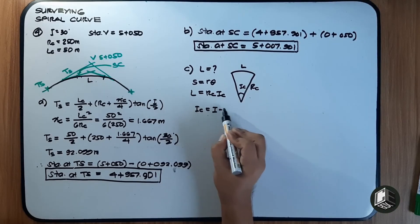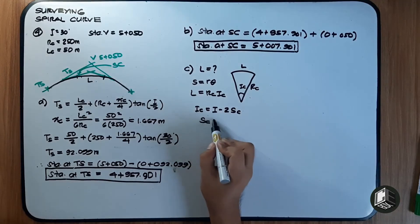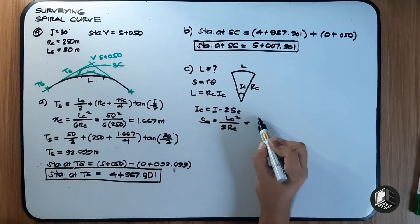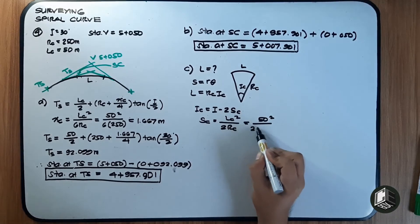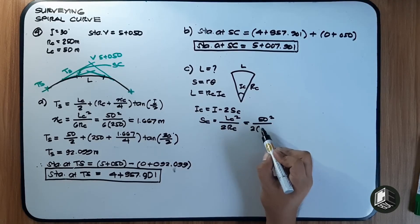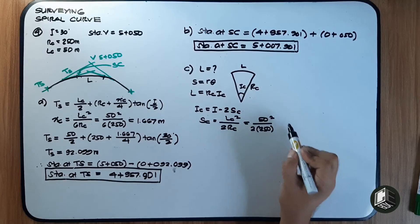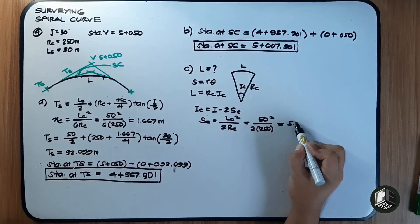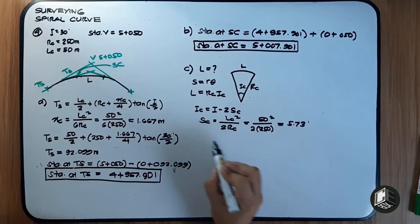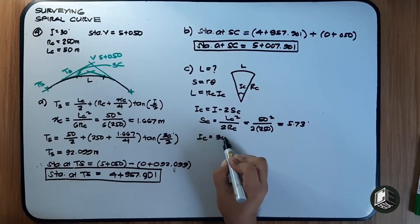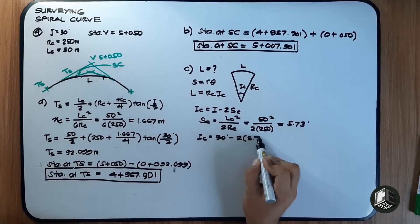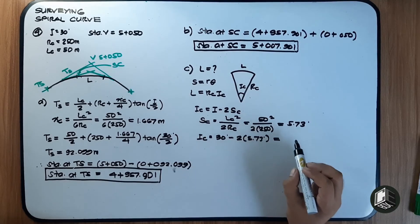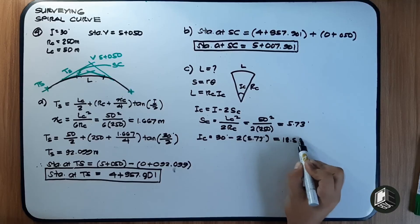IC equals I minus 2 times SC. To find SC: SC equals LC squared over 2RC, which is 50 squared over 2 multiplied by 250. SC equals 5.73 degrees. Therefore IC equals 30 degrees minus 2 multiplied by 5.73 degrees, giving IC equal to 18.54 degrees.